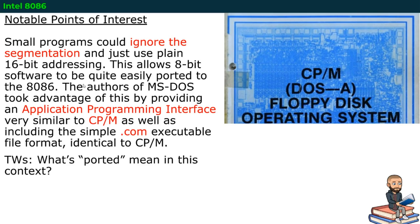Small programs could ignore the segmentation that the 8086 enabled and just use plain 16-bit addressing. This allowed some of the older software, the 8-bit software, to be quite easily ported to the 8086. So, Intel was obsessed with making old stuff work on modern things. Maybe to encourage people to buy the modern things and not worry about their older games or programs not working on their new device. Though, in the 70s and 80s here, having computers were much rarer than they are today.